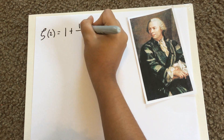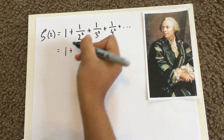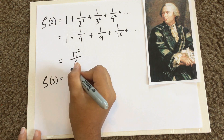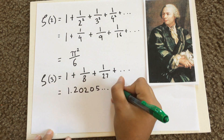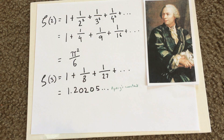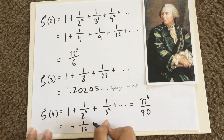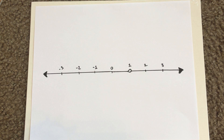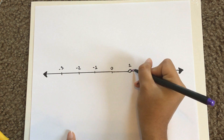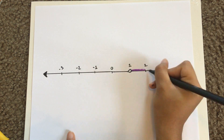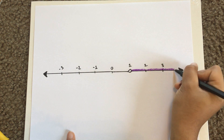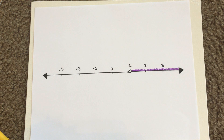Nevertheless, mathematicians like Euler are able to find values for any s greater than 1. For example, when s equals 2, the zeta function is actually pi squared over 6. So far we know values for the zeta function for all arguments above 1. This is our domain.